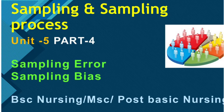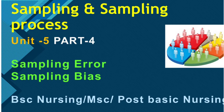Welcome to Science Easy Tech channel. In this video we are going to discuss sampling error and sampling bias, which comes under Unit 5 — sampling and sampling process. This is my part 4 video. I have already posted many videos related to sampling process and various types of sampling like probability and non-probability sampling methods. Links are in the description box, end card, and icard.